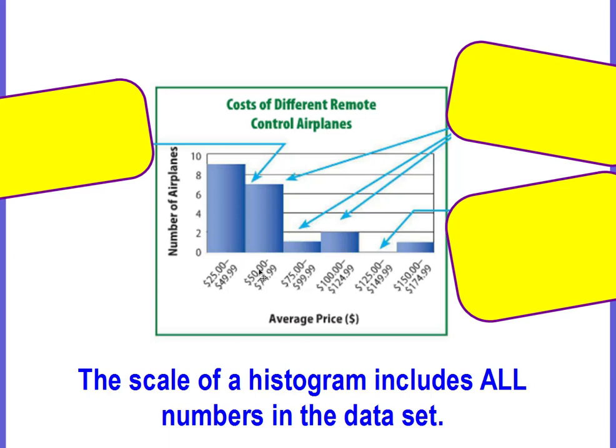This is an example of a histogram. The scale of a histogram includes all the numbers that are in the data set. So you can see the intervals. We have an interval of $25 to $49.99, we have another interval of $50 to $74.99, and so on.